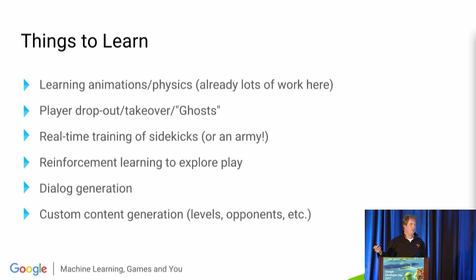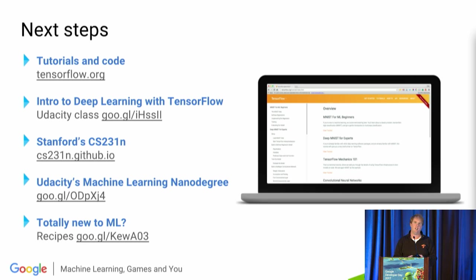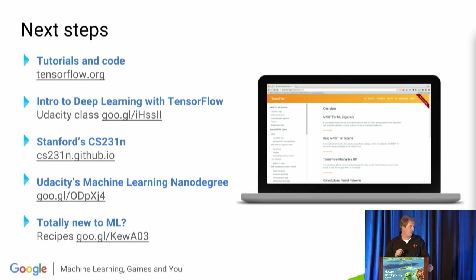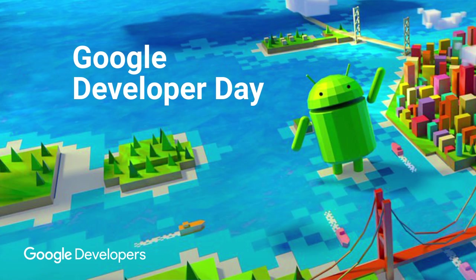And speaking of oysters, here's where we have ours. TensorFlow.org is where you can find tutorials, code, and the TensorFlow framework for doing deep learning. We have a Udacity course. I strongly recommend the Stanford CS 231 class on GitHub — they have an amazing introduction to how machine learning works. We also have a video series that introduces the basic concepts of machine learning. Thank you very much.